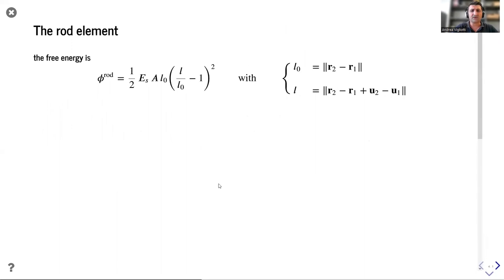As an example, let us consider the rod element. Rod elements are structural elements that store energy by changing their length. For instance, this is the expression of the free energy for a rod element whose initial length is L0 and the current length is L.